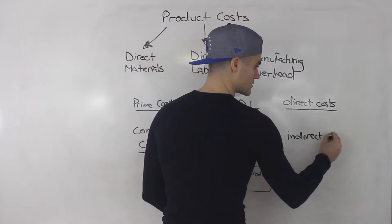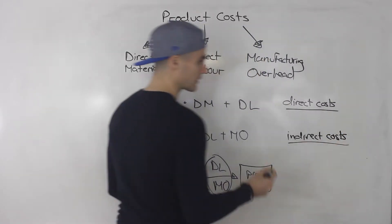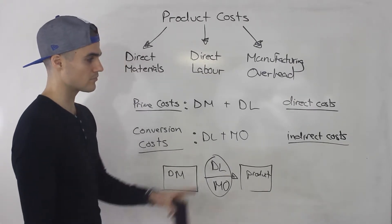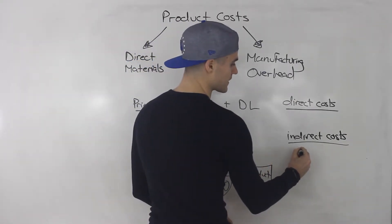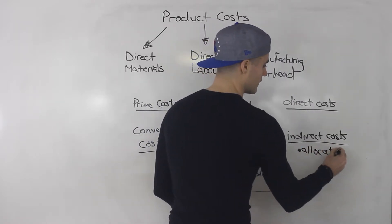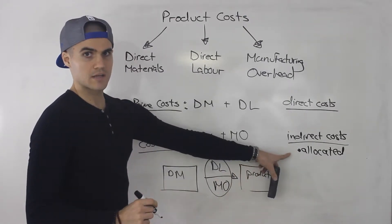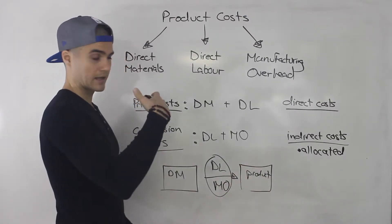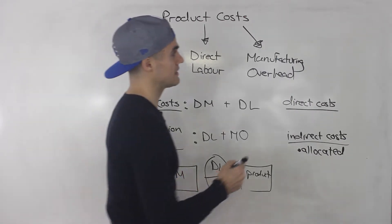You can also have a definition for indirect costs. So like indirect material and indirect labor — that's pretty much going to go under manufacturing overhead. Something I didn't mention with indirect costs is that they have to be allocated.